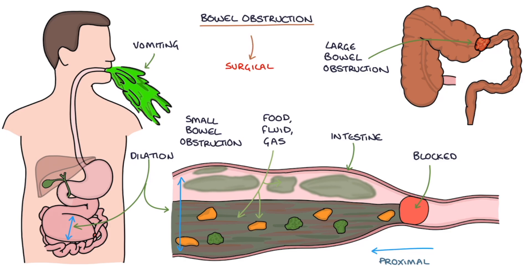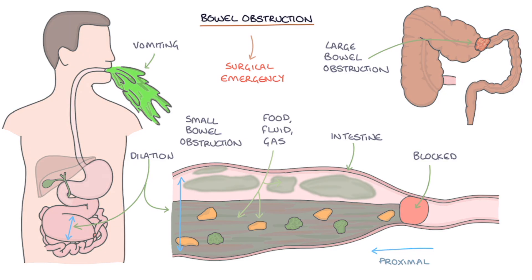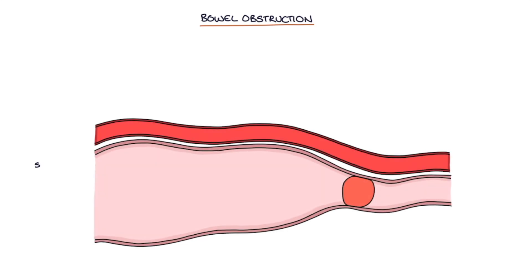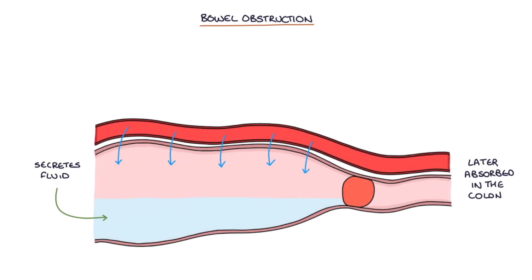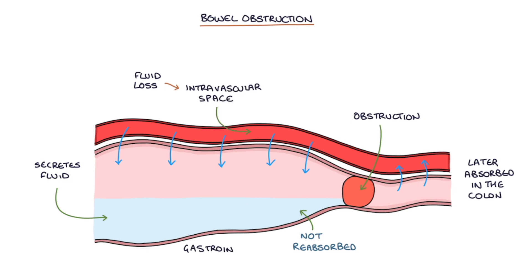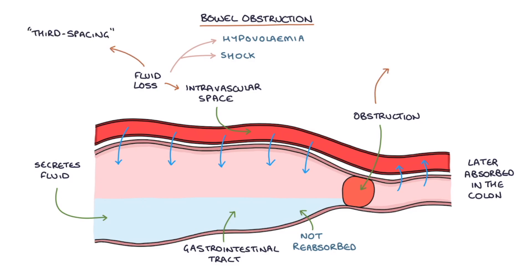Bowel obstruction is a surgical emergency. The gastrointestinal tract secretes fluid that is later absorbed in the colon, and when there's an obstruction this fluid cannot reach the colon and cannot be reabsorbed. As a result, there is fluid loss from the intravascular space into the gastrointestinal tract, leading to hypovolemia and shock. This abnormal loss of fluid is referred to as third spacing. The higher up the intestine the obstruction is, the greater the fluid loss, as there is less bowel over which the fluid can be reabsorbed.